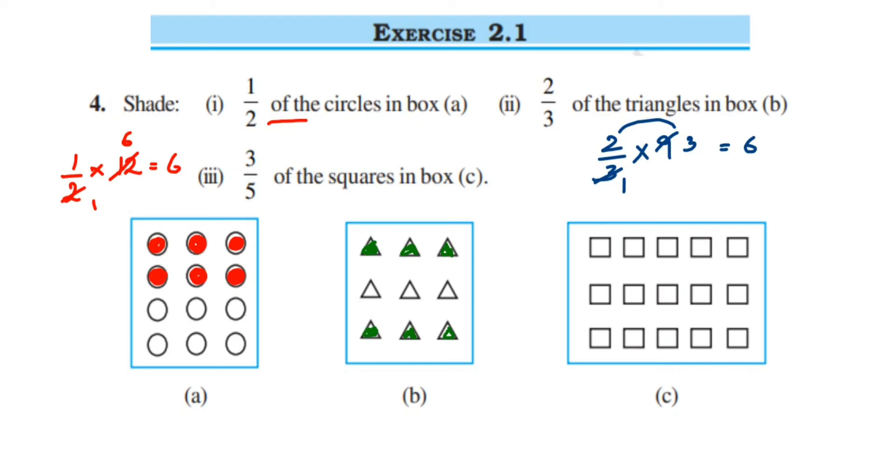Then the next one we have, squares in the last one. So three-fifths of the squares in box C. How many squares are there? Let us count. In one row we have 5, like that we have 3 rows, so 3 fives are 15. Total we have 15 squares here.